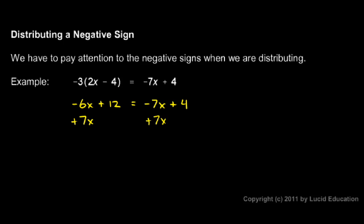So let's look at the left side. Negative 6x plus 7x is 1x, and I still have this plus 12. So it's x plus 12. On the right, the negative 7x and the positive 7x add up to 0 — in other words, they cancel each other out. So they're gone, and I just have a 4 on the right.